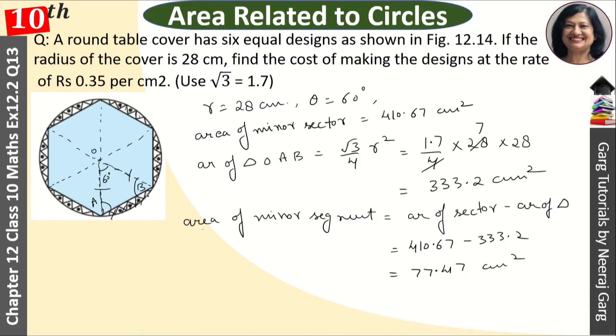And now how many segments are there? 6 segments. Area of 6 designs segments, 6 designs, that is equal to 6 into 77.47, and this is approximately 464.82 centimeter square.